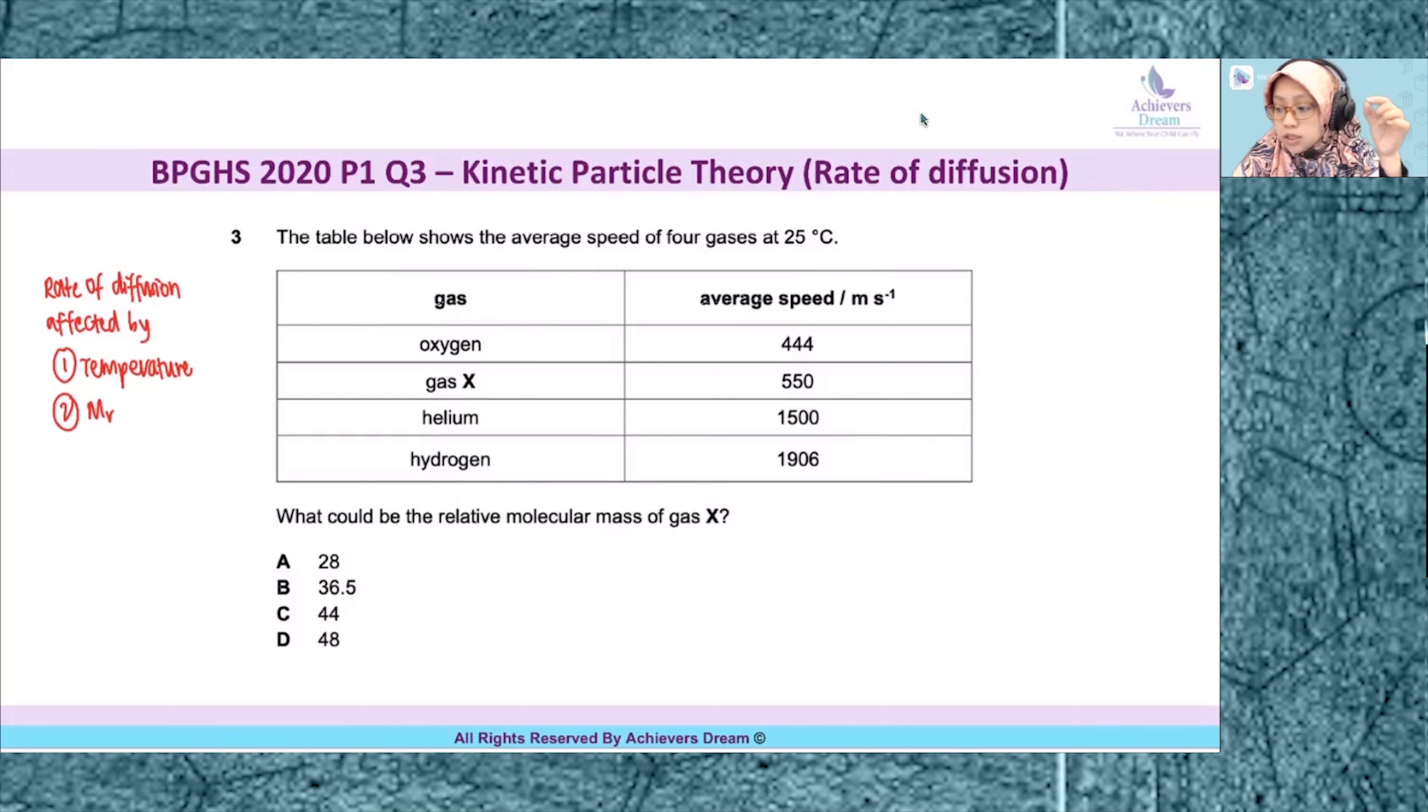Question three is testing students on kinetic particle theory, specifically the concept of rate of diffusion. I've already written down the factors that affect rate of diffusion.